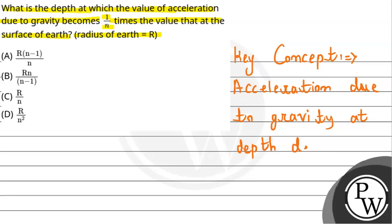So the formula is: g dash is equal to g times 1 minus d divided by R. Where g will be the acceleration due to gravity on the surface of earth, d is the depth, and R is the radius of earth.